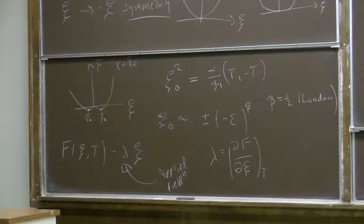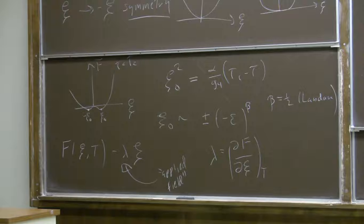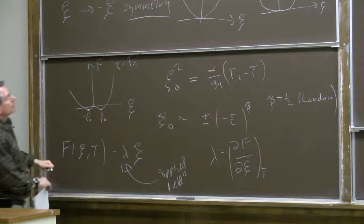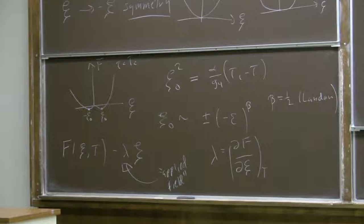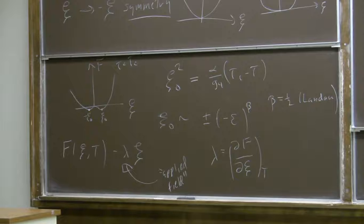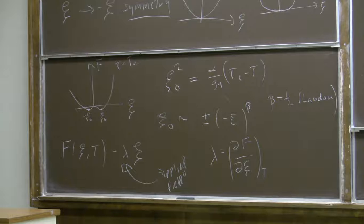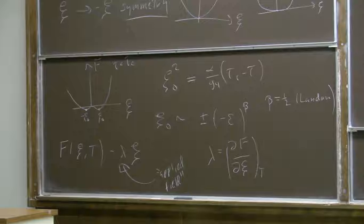In the low-temperature phase we can replace psi by psi_0 squared. That's zero for tau greater than tau_c, but it's alpha over g4 times (tau_c minus tau) when tau is less than tau_c. When we multiply by 3g4, this term, when tau is less than tau_c, looks like the previous term except with the opposite sign and a coefficient of 3.